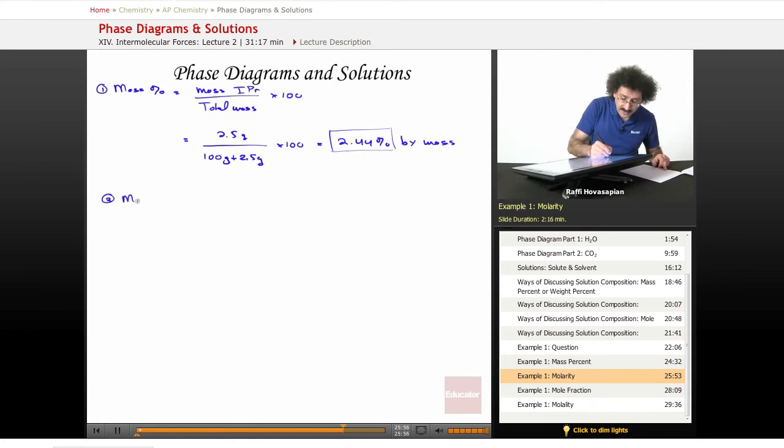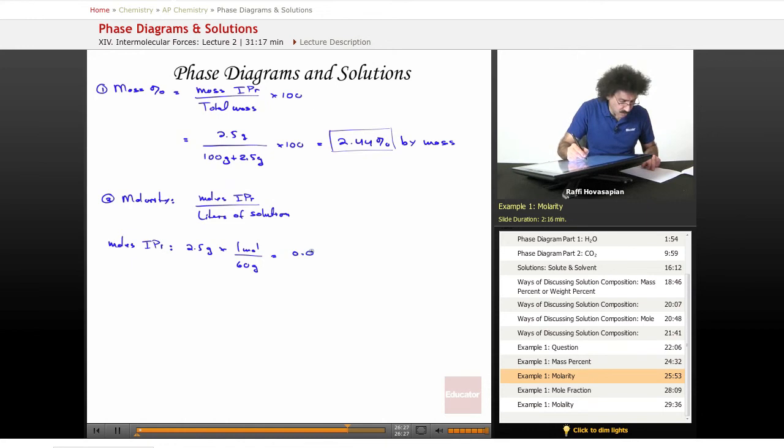Number two, molarity. Molarity is the moles of isopropanol over liters of solution. So here we have some conversion that we need to make. Let's talk about moles of solute first. Moles of isopropanol. We have 2.5 grams and 1 mole of isopropanol is 60 grams. So we end up with 0.0417 mole. We have the numerator.